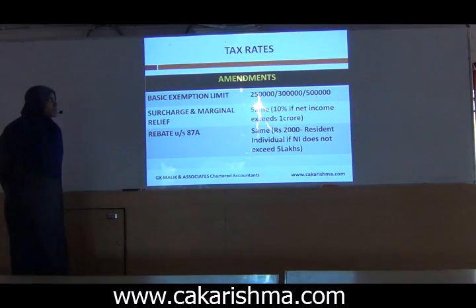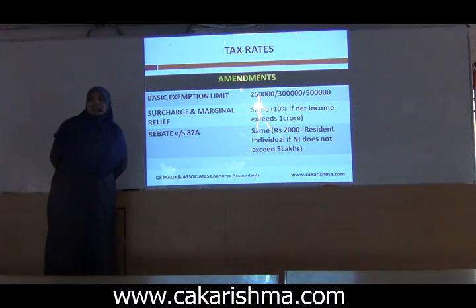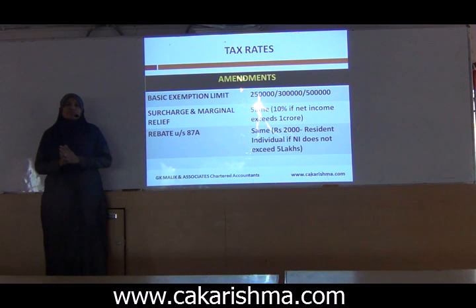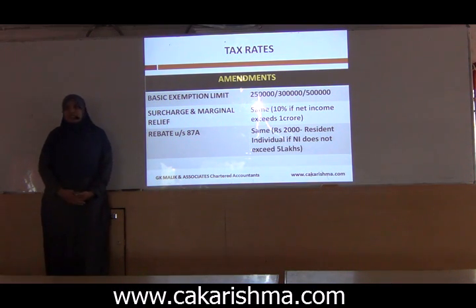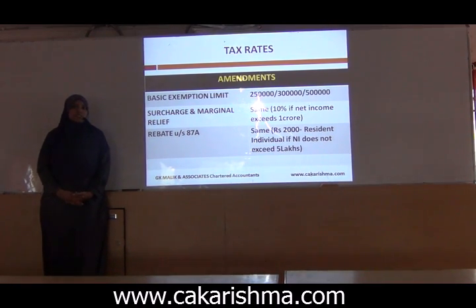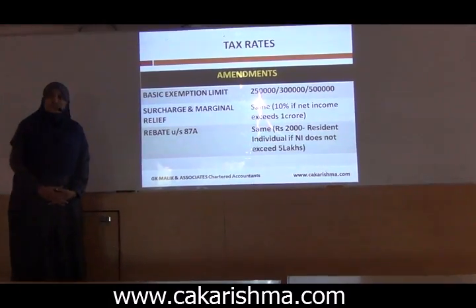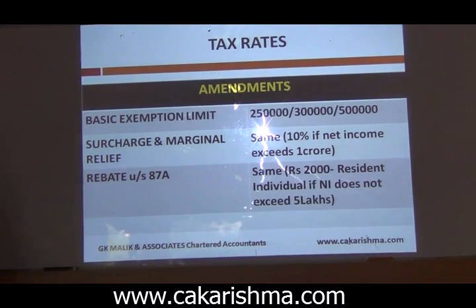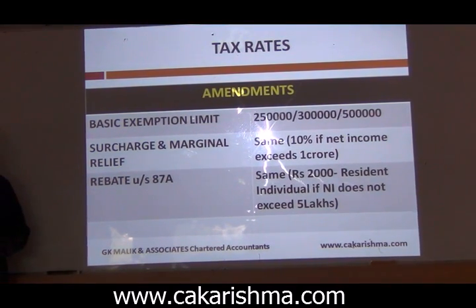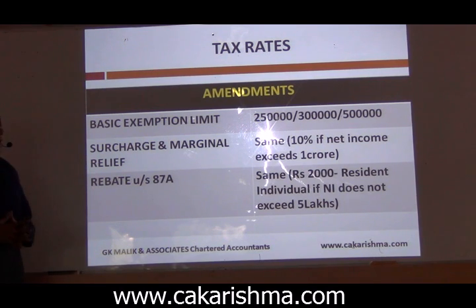This is a quick revision on the first chapter, that is Tax Rates. This has a lot of significance because you will be computing your compulsory question. The basic exemption limit is 2.5 lakhs, but if it is a senior citizen — 60 years or more — then it is 3 lakhs, and for super senior citizen — 80 years or more — it is 5 lakhs. Surcharge is applicable at the rate of 10% if income exceeds 1 crore.